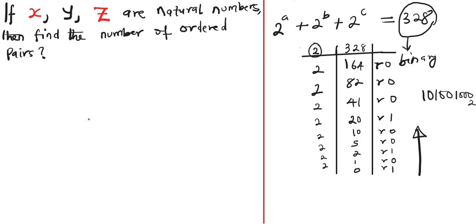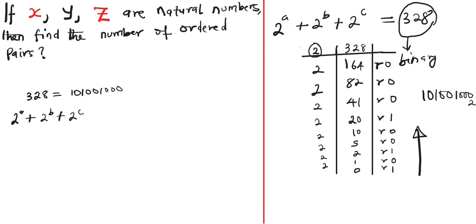So the binary equivalent of 328 is 101001000 base 2. Let's write the equation again: 2^a plus 2^b plus 2^c equals 101001000 in binary.